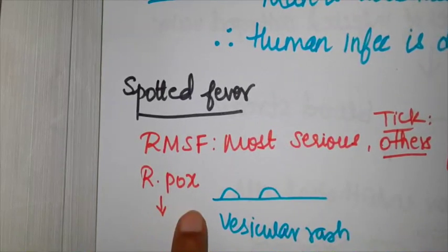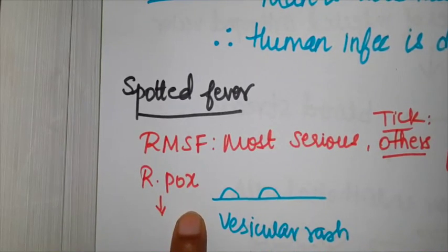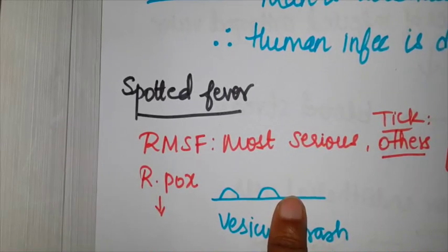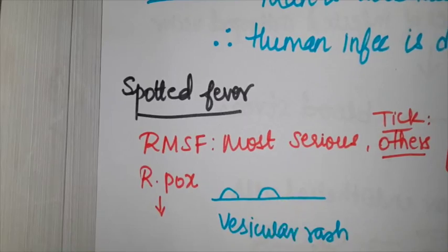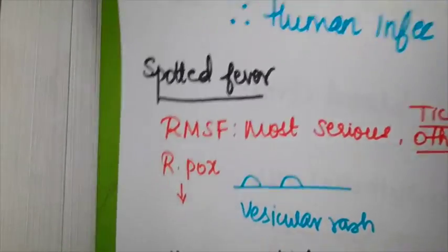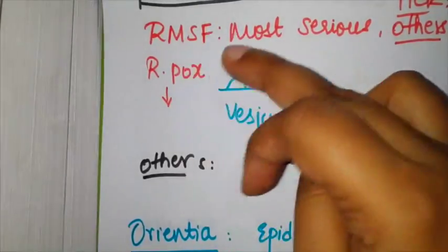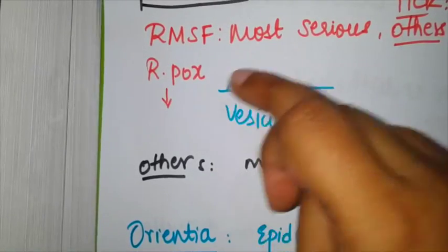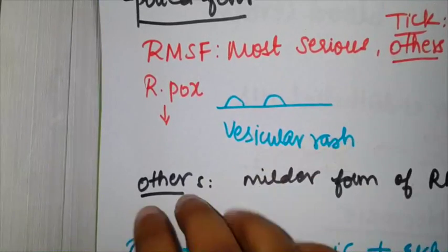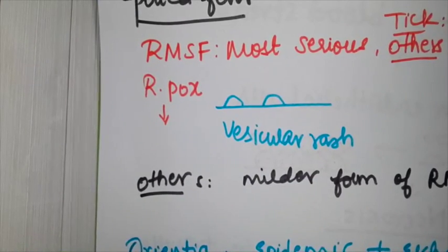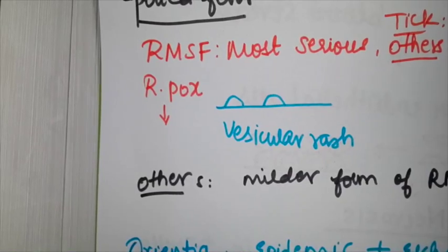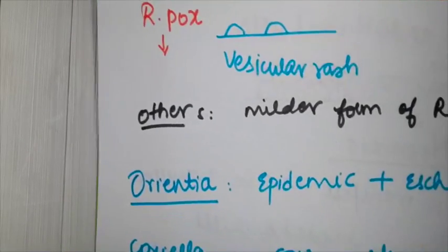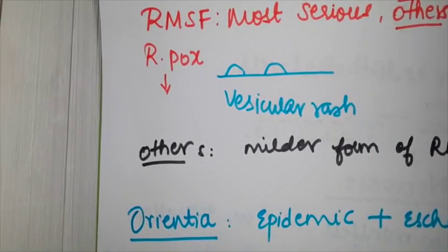Rickettsial pox, since its similarity with chickenpox, forms rash which are vesicular in nature. All other types except Rocky Mountain spotted fever, which is very serious, and rickettsial pox, which forms vesicular rash, all other forms in spotted fever are milder forms of Rocky Mountain spotted fever.